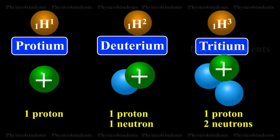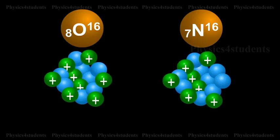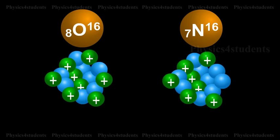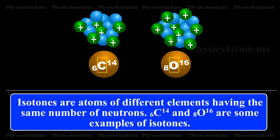As the atoms of isotopes have identical electronic structure, they have identical chemical properties and are placed in the same location in the periodic table. Isobars: Isobars are atoms of different elements having the same number of neutrons. 6C14 and 8O16 are some examples of isobars.